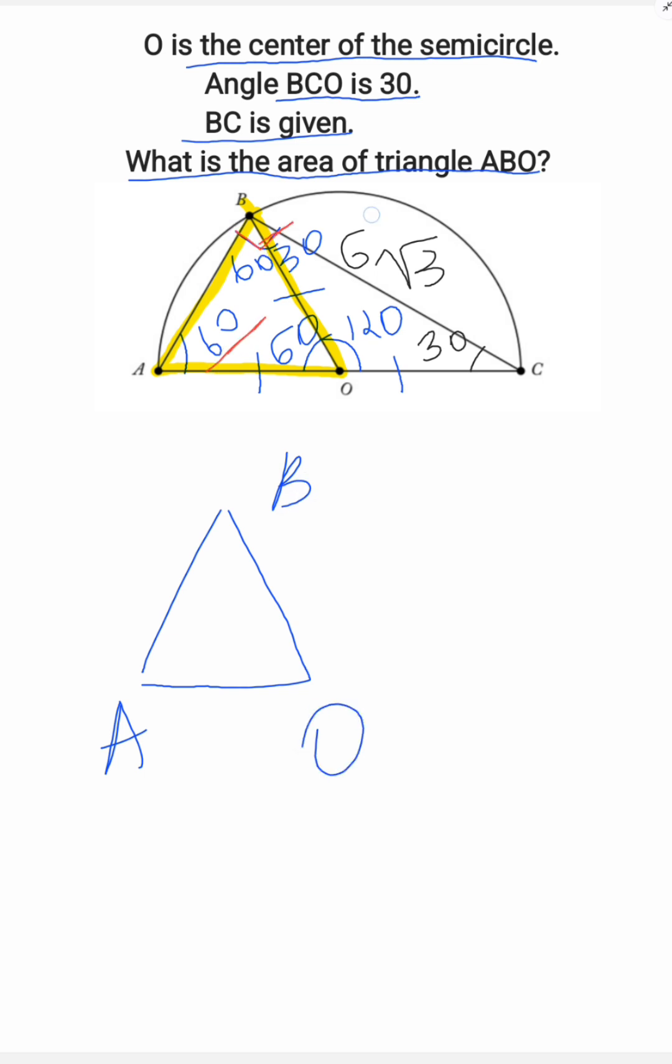Let's look at the 60 degree angle. Opposite of it, we have 6√3. So opposite of 30 will be 6 and the hypotenuse will be 12. As AO and OC are the same, each of them will be 6.